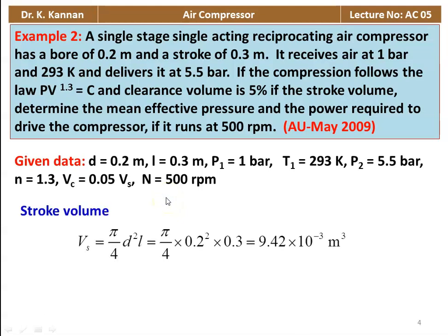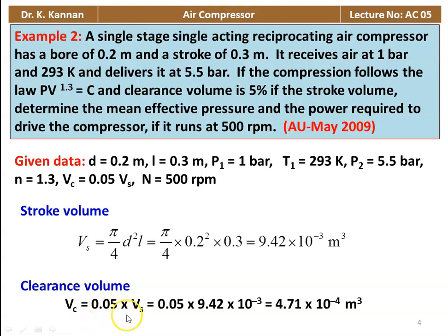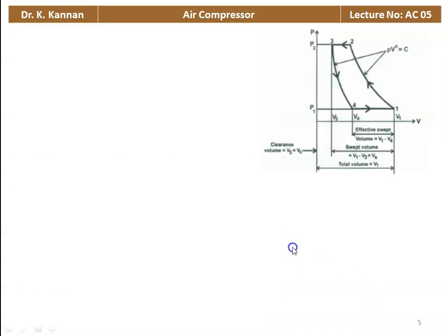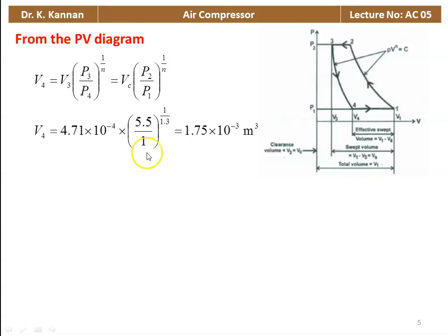Stroke volume Vs = (π/4) × D² × L = (π/4) × 0.2² × 0.3 = 9.42 × 10⁻³ m³. Clearance volume Vc = 0.05 × 9.42 × 10⁻³ = 4.71 × 10⁻⁴ m³. From the PV diagram, V4 = Vc × (P2/P1)^(1/n) = 4.71 × 10⁻⁴ × (5.5/1)^(1/1.3) = 1.75 × 10⁻³ m³.